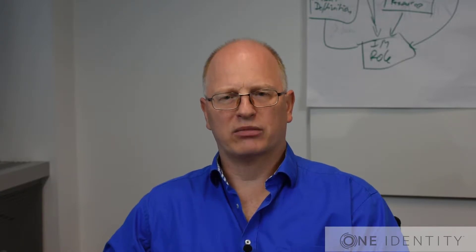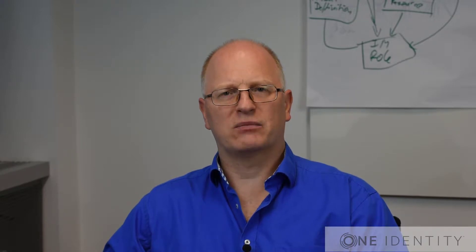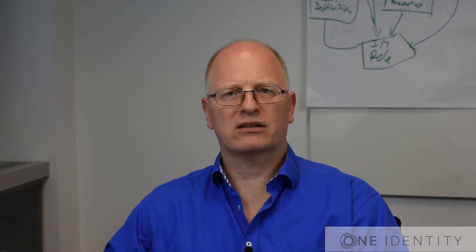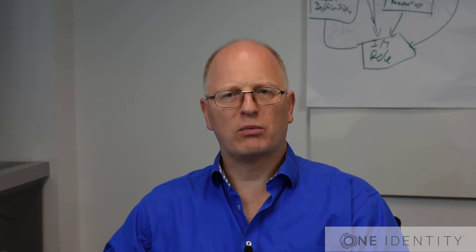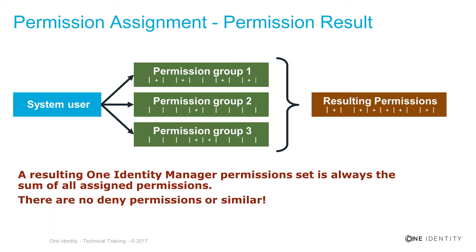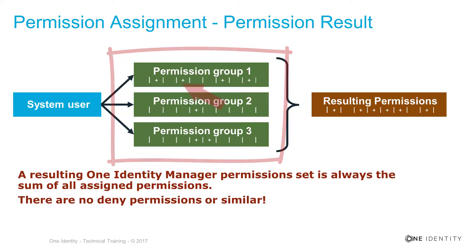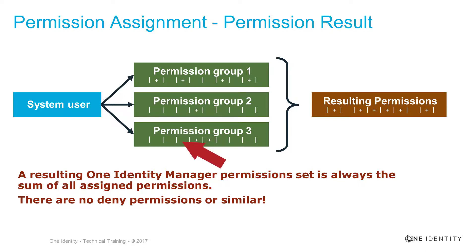That means if you get some permissions in a permission group and that permission group is yours, you will get the permission. There are no such things as deny permissions — permissions that would revoke others. The sum of all permissions across all permission groups you belong to is the sum of permissions you have. On the slide you can see three permission groups assigned; the plus shows a permission you have, and the resulting permission set is the sum of all permissions assigned.